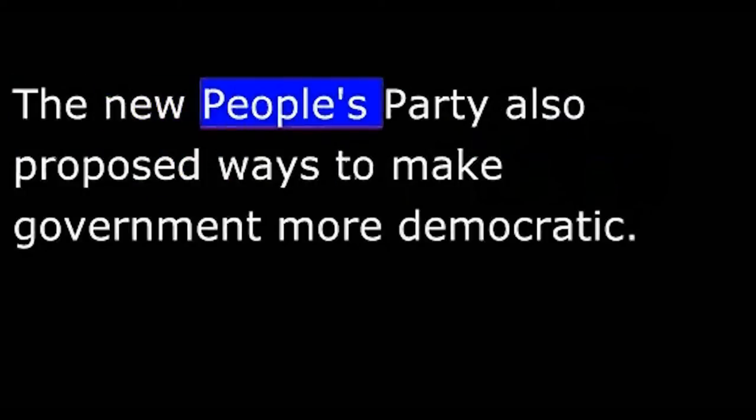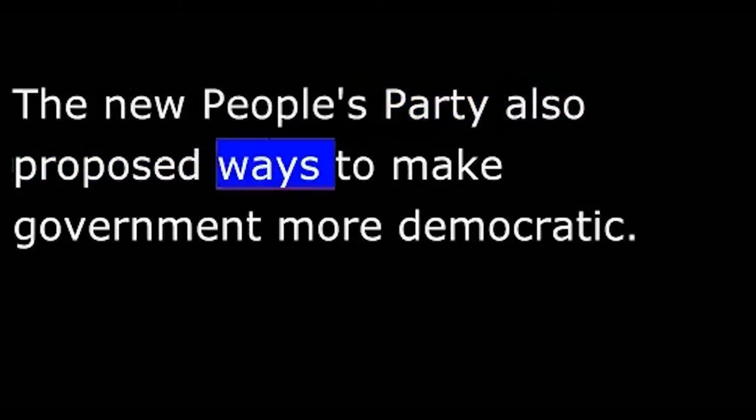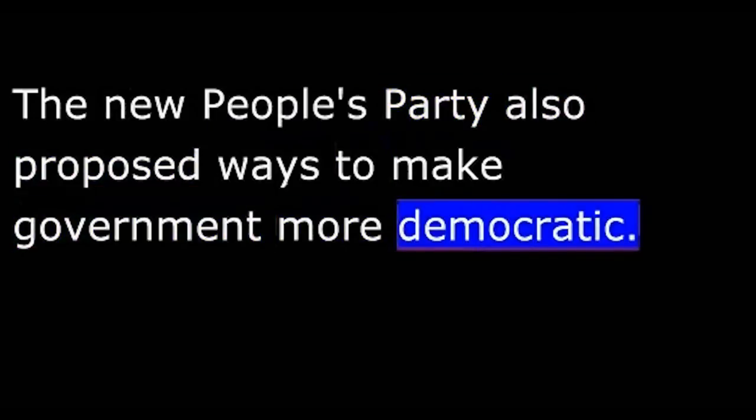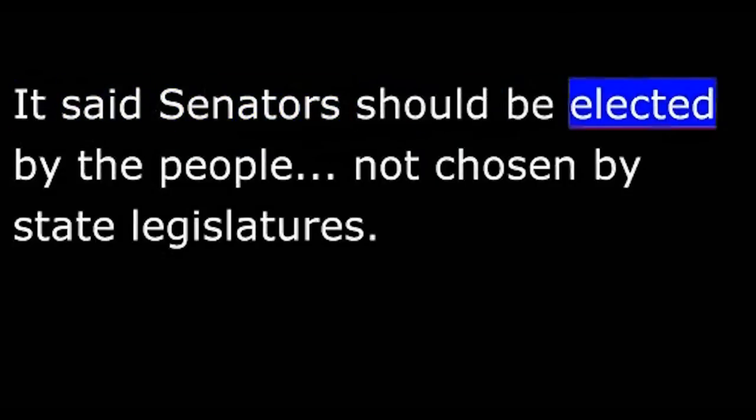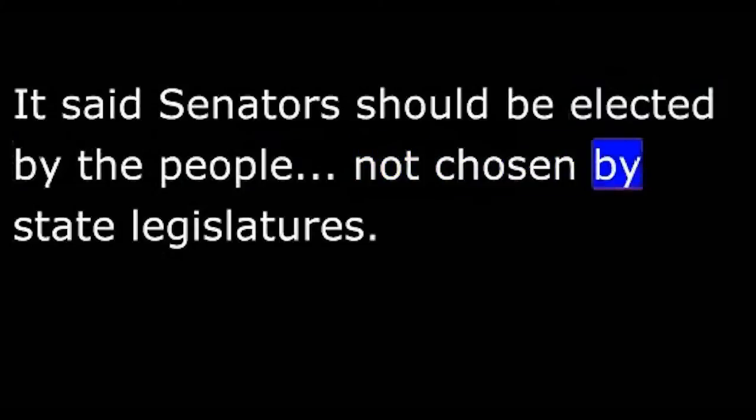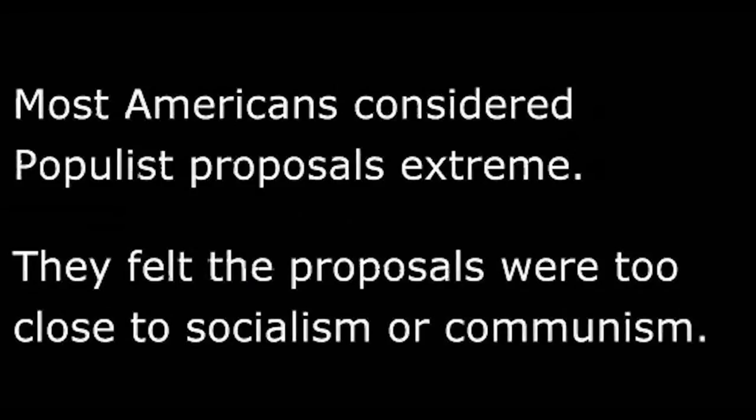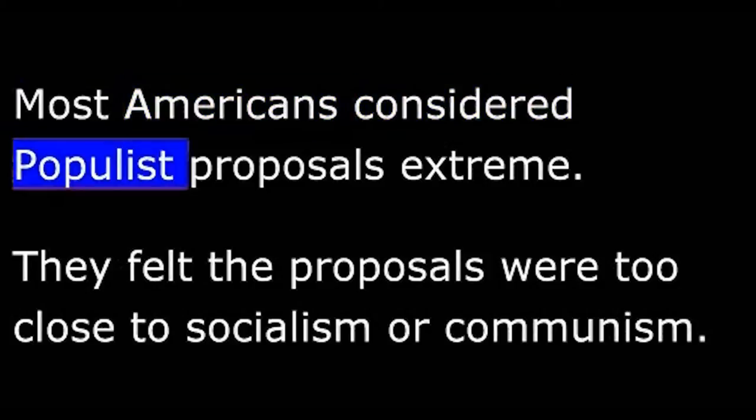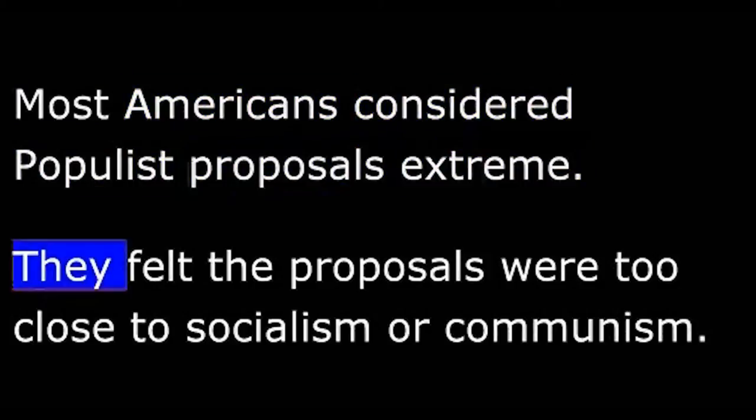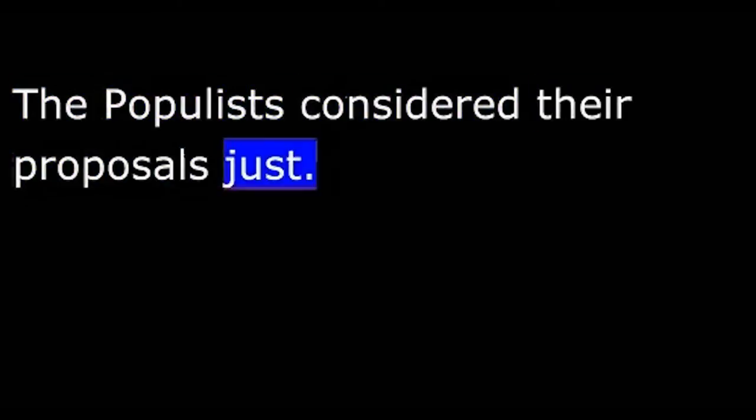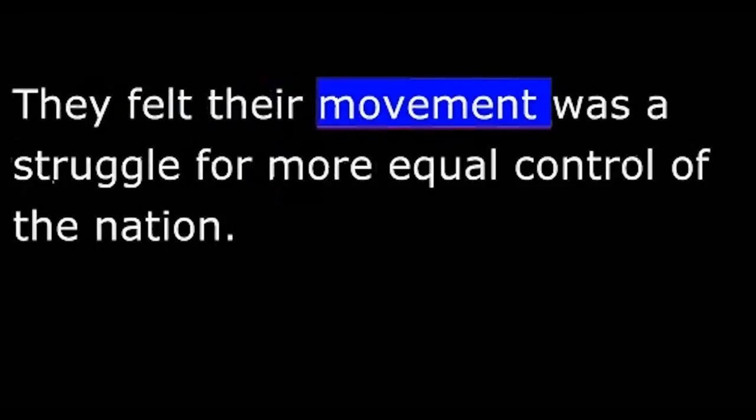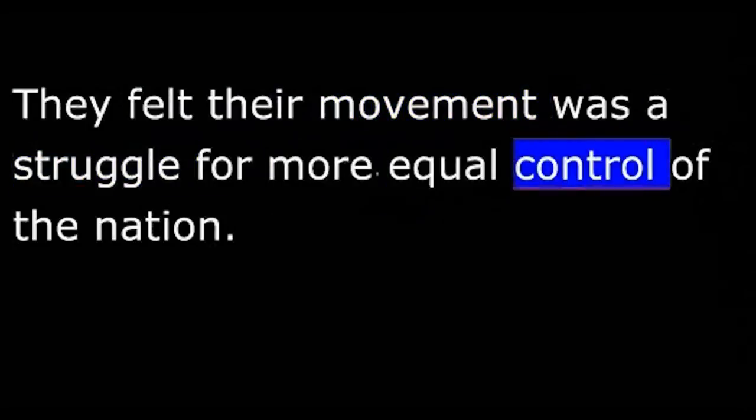The New People's Party also proposed ways to make government more democratic. It said secret ballots should be used in all elections. It said senators should be elected by the people, not chosen by state legislatures. Most Americans considered populist proposals extreme. They felt the proposals were too close to socialism or communism. The populists considered their proposals just. They felt their movement was a struggle for more equal control of the nation.